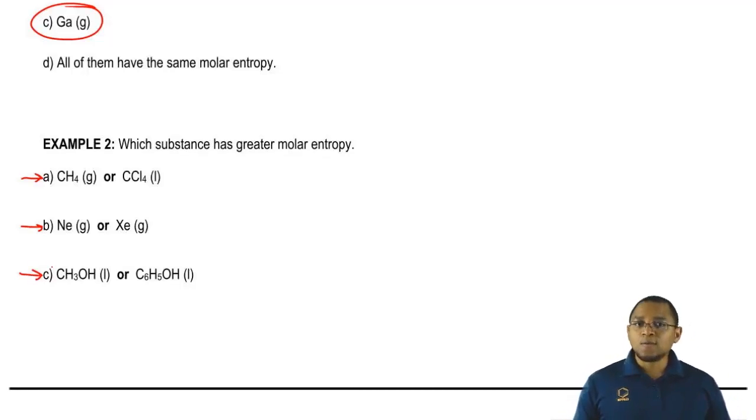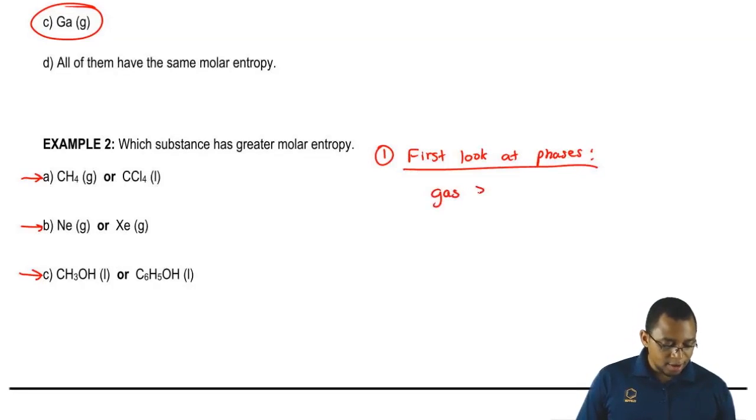The first one we have CH4 gas or CCL4 liquid. Now, the way you look at these types of questions is you first look at their phases. We first look at phases and all you're going to say here is gases have higher entropy than liquids and liquids have higher entropy than solids.